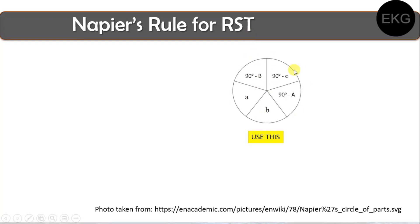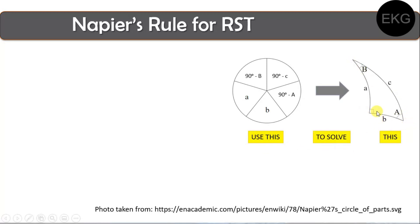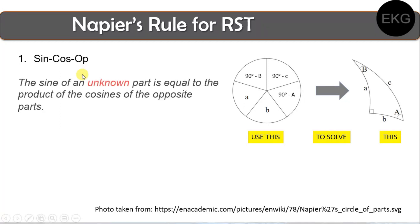So what is Napier's Rule? There are two rules. The first is what is called the sin-cos-off rule. It states that the sine of an unknown part is equal to the product of the cosines of the opposite parts. For example, if side a is unknown, then sine of a is equal to the product of the cosines of the opposite parts — which are (90° − A) and (90° − B).